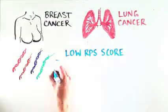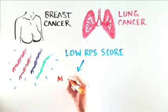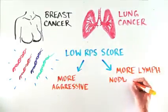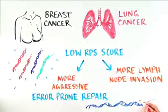Well, the scientists went on to show that breast and lung cancer tumors that had a low RPS score behaved more aggressively, and had more invasion of the lymph node and potential for metastasis. These low RPS tumors repair DNA using the error-prone method.